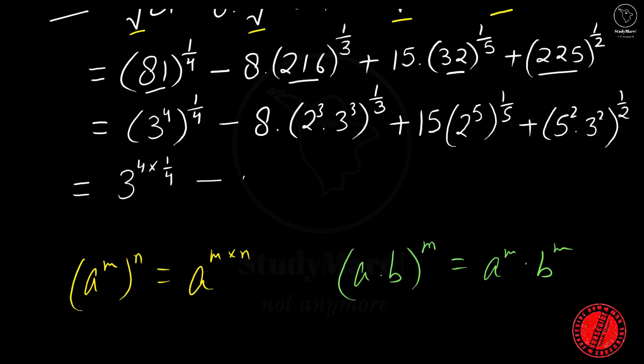Minus 8 into. Now, here if you see we have the expression in the form a into b whole raised to the power m is equal to a to the power m into b to the power m. So let's use this. So we get here 2 to the power 3 into 1 by 3 multiplied by 3 to the power 3 into 1 by 3 plus 15.